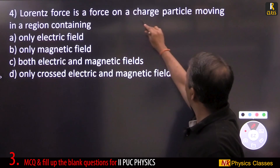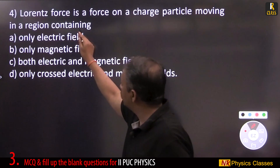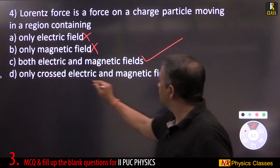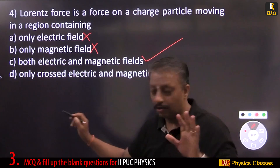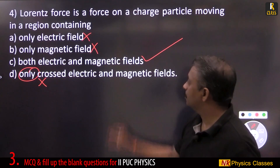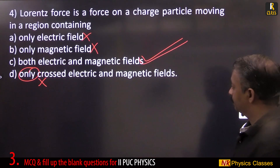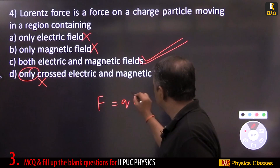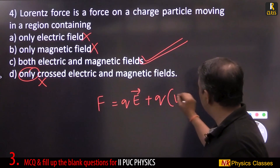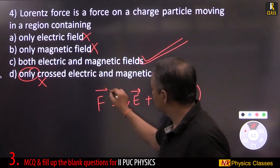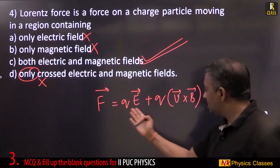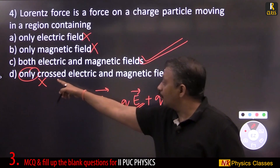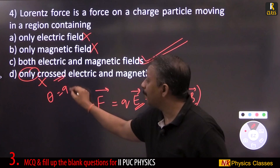Lorentz force is a force on a charged particle moving in a region containing electric and magnetic fields — not necessarily crossed fields. The expression for Lorentz force is F = q(E + v×B). The angle between electric and magnetic fields can be anything; 'only crossed' means theta = 90 degrees, which is not necessarily the case.